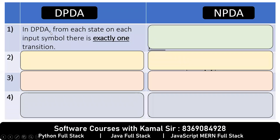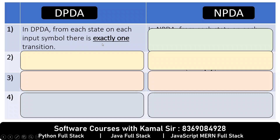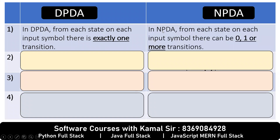Point number 1. In DPDA, from each state on each input symbol, there is exactly one transition. In NPDA, there can be 0, 1, or more transitions.